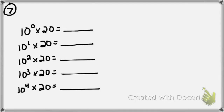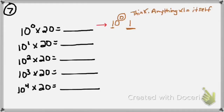In this lesson you'll see problems like example number 7, which is not a difficult problem — it's just many small simple problems, in this case five separate problems. First: 10 to the 0 power times 20. If I have 10 to the 0 power, I write the number 1 with no zeros — so 10 to the 0 power is simply 1. Anything times 1 equals itself, so 1 times 20 equals 20. Therefore, 10 to the 0 power times 20 equals 20.